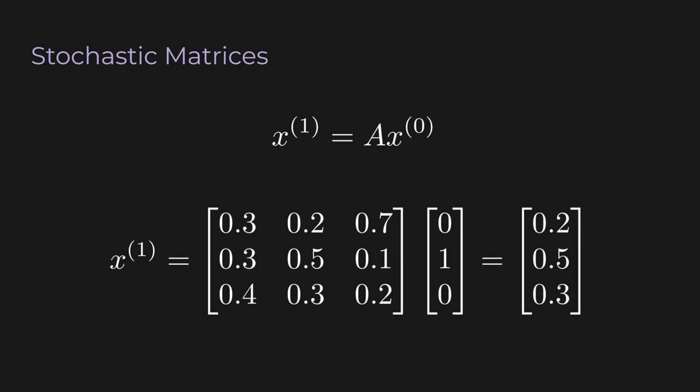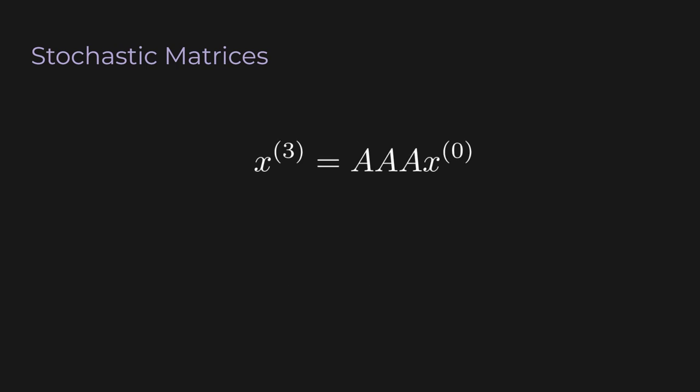In our example, if we're in state B at time step 0 with absolute certainty, we multiply the stochastic matrix to get the state vector for time step 1. The probability of going to state A would be 0.2, staying in B would be 0.5, and going to C would be 0.3. We just got back the transitions we already knew. But here's where things get interesting. If I want to find the state vector at time step 3, I just multiply the state vector at time step 0 by the stochastic matrix 3 times. That's it. Matrix multiplication will automatically enumerate all paths between any two states and multiply and add up all those probabilities correctly.